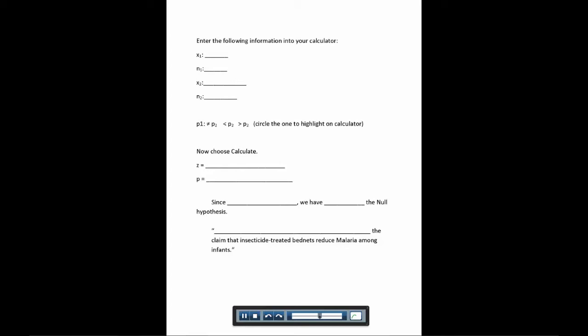And for this problem, we're going to enter the following information. So remember, X1 was 15, N1 was 343, X2 was 27, and N2 was 294. And remember, our alternate hypothesis was that P1 is less than P2. So we're going to choose that less than.